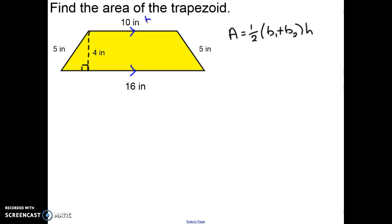10 inches is base one, the short base. 16 inches is base two, the long base. The height must be perpendicular to the two bases — in this trapezoid the height is 4 inches. Now we can substitute in our values.